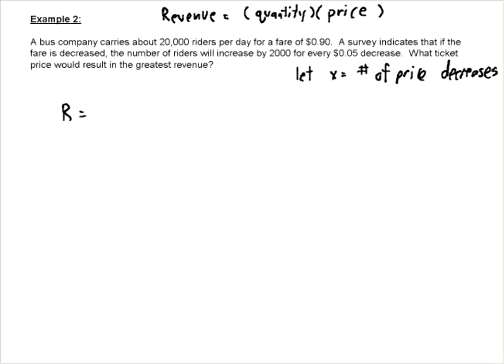So remember, we want to create an equation where we maximize revenue. So revenue is going to be quantity multiplied by price. So what's the quantity? Well, we have 20,000. That's not going to change. But what's going to happen is we are going to increase, so we are going to add 2,000 people every